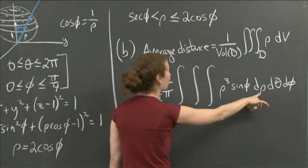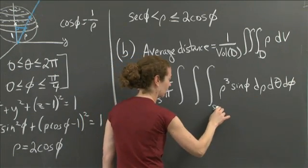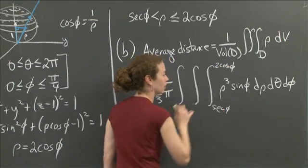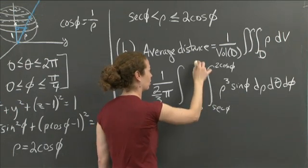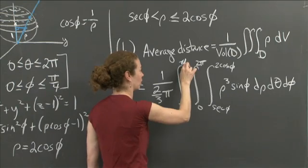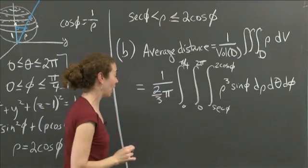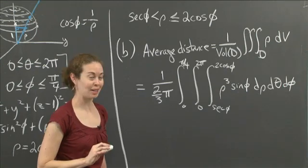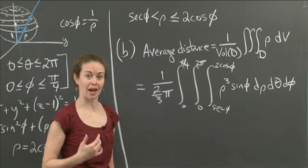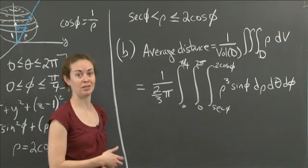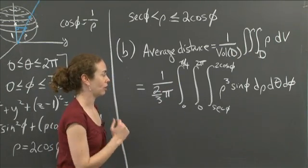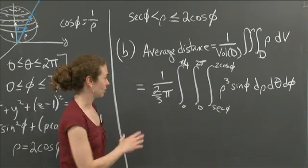Now dρ, I know the bounds are secφ to 2cosφ. dθ, my bounds are 0 to 2π. And dφ, my bounds were 0 to π over 4. And so that actually, I didn't make you evaluate it. I'm just making you set it up. That actually is the solution we wanted for part B. I wanted to average the distance from any point in D to the origin. So I just took the average value of the function ρ over that region D. And so that's how you finish that up.